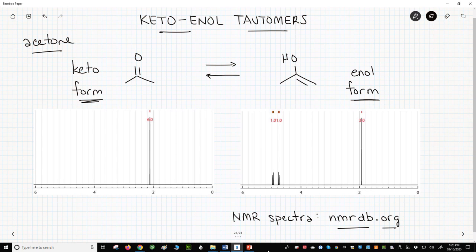While the enol tautomer does exist, its concentration is very low. The equilibrium favors the keto form by a factor of about 1000 to 1.